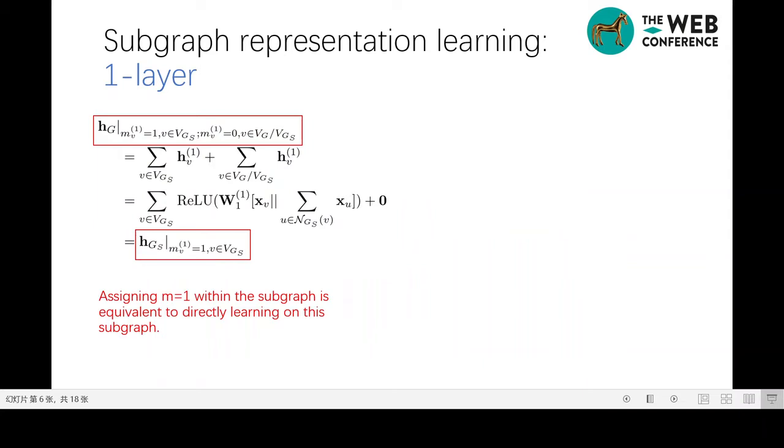We firstly explain the single-layer case. We can extract the given subgraph Gs by assigning all nodes within the subgraph m equals 1 and all the other nodes m equals 0. Then, the learned graph representation only involves the subgraph Gs. Or in other words, the learned graph representation is equivalent to that a general model learns on the subgraph. Soft-mask layer actually converts a problem of extracting desired subgraph into finding proper mask assignments. This conversion has no scale limitation on the learned subgraph. One can extract any desired subgraph by proper mask assignments.